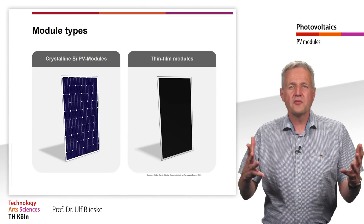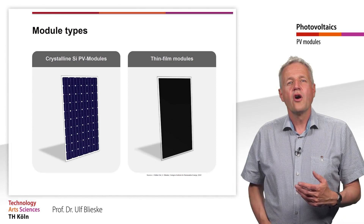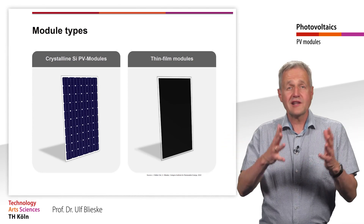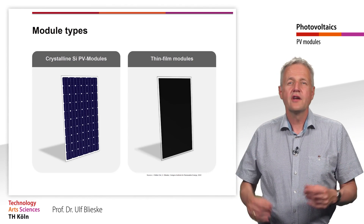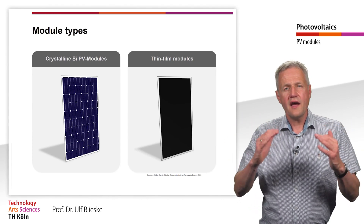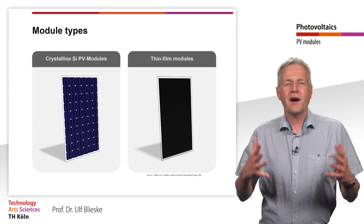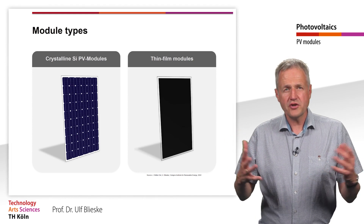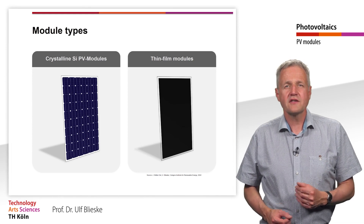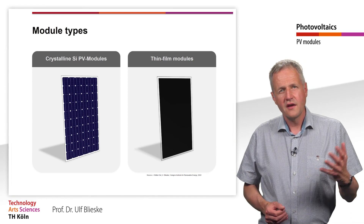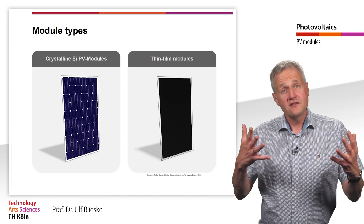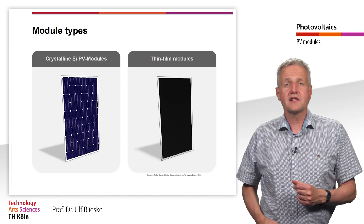For example, thin film modules can also be partly flexible, often have a homogeneous, mostly black color, and significantly higher voltages and lower currents, and partly have a more favorable temperature behavior than crystalline silicon modules. They are therefore used for various niche applications, such as building integrated PV.